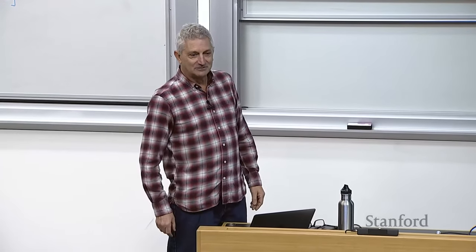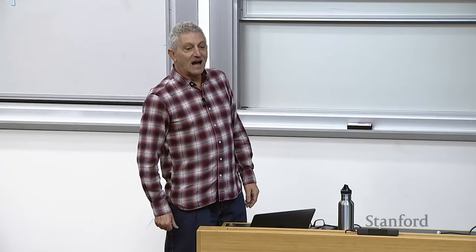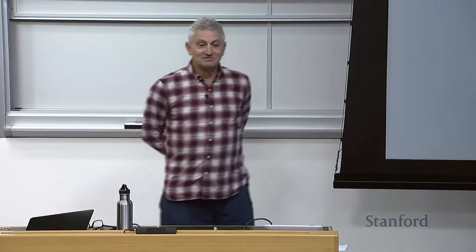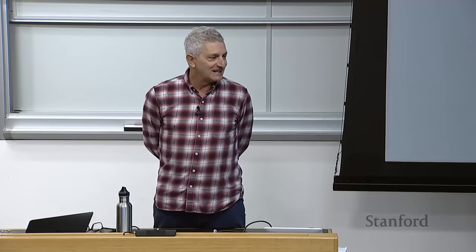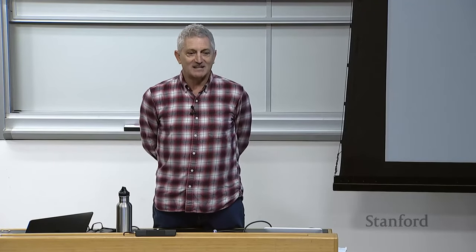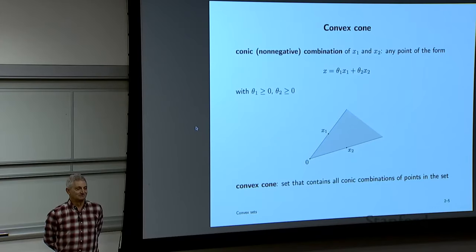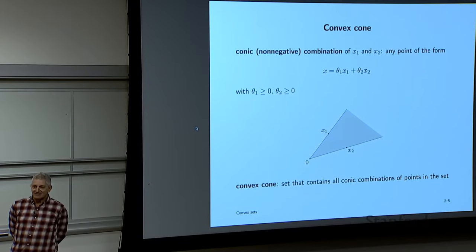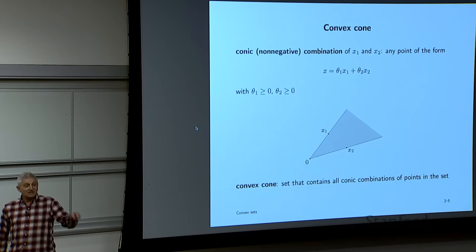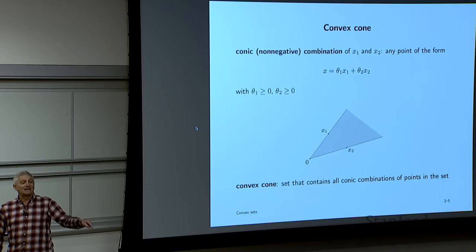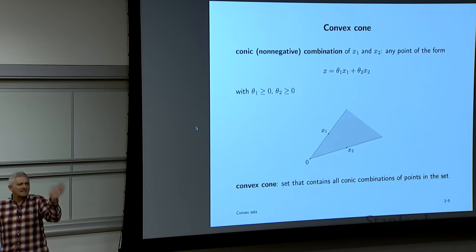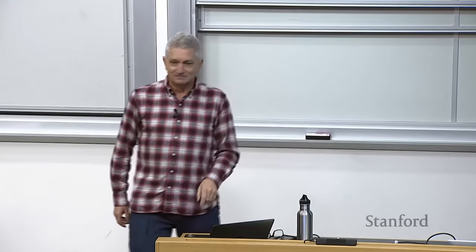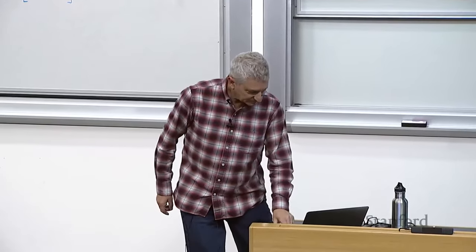A student asks: why don't the coefficients need to sum to one for the conic combination? It's simply by definition. For a conic combination they don't have to add up to one — that's just what the definition says. For a convex combination, it's literally part of the definition that they sum to one.